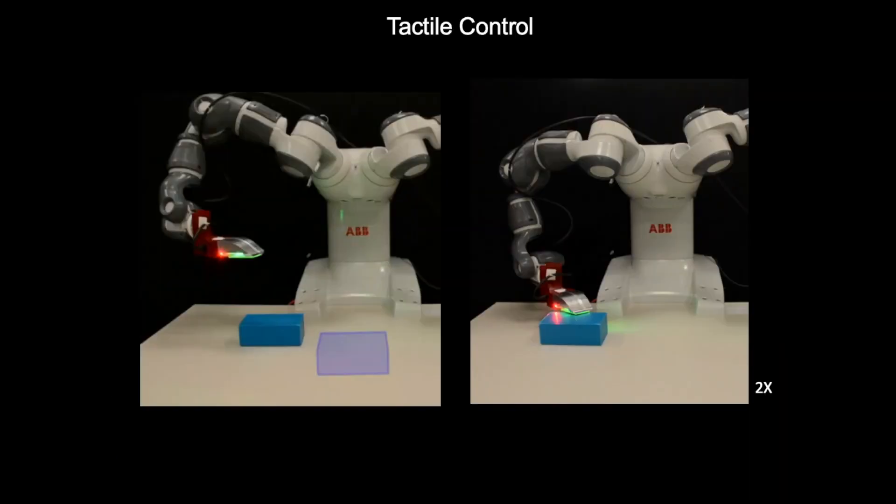We divide the role of tactile control into two goals: controlling the object state and controlling the contact state between object and end effector.